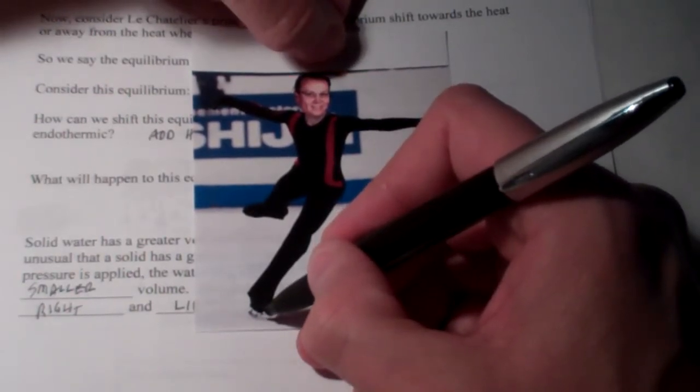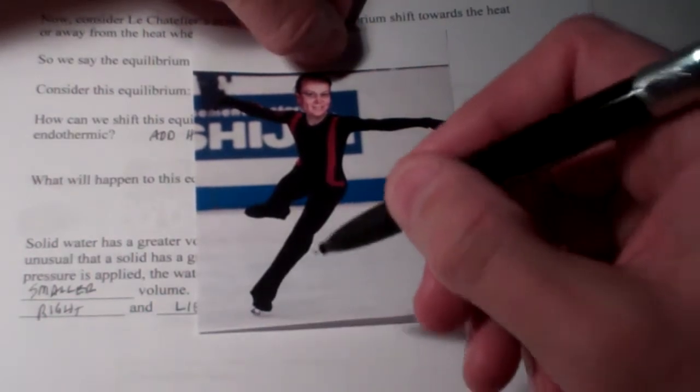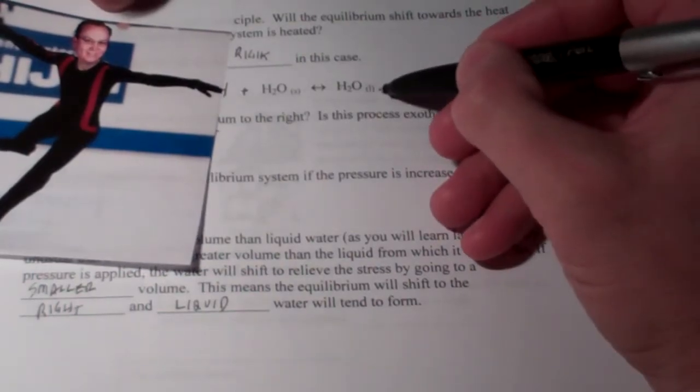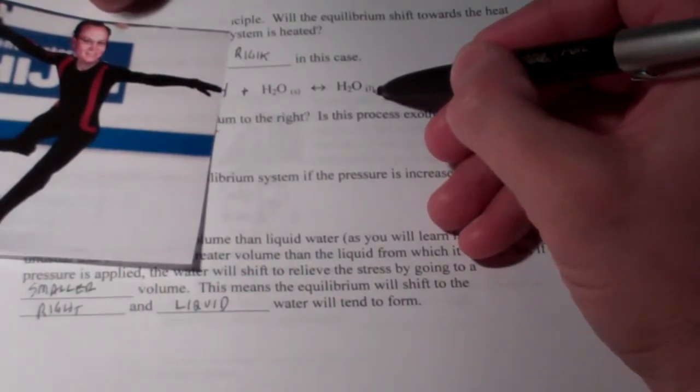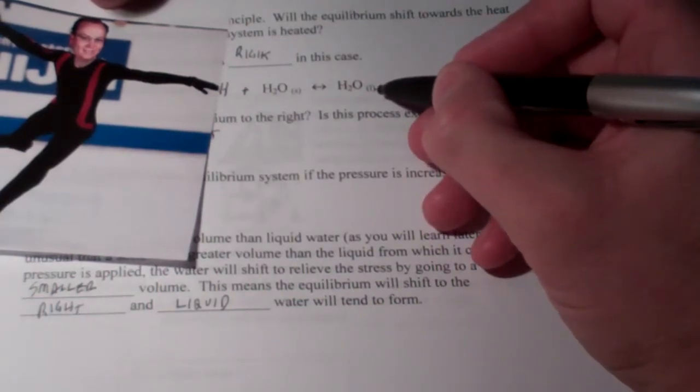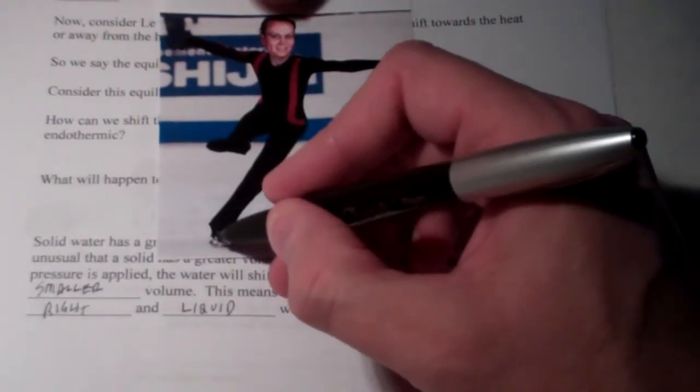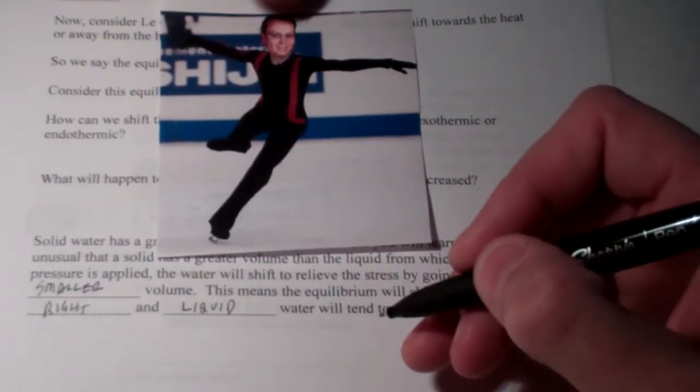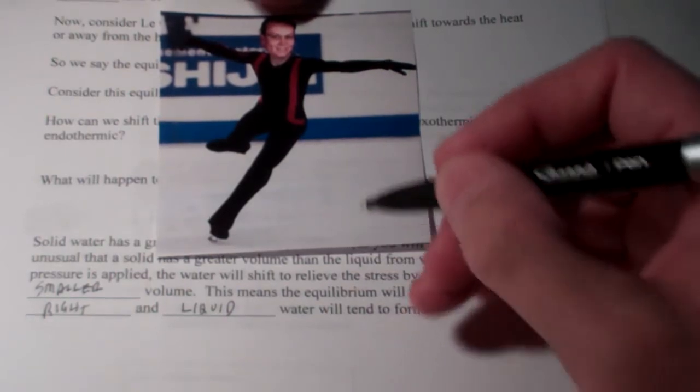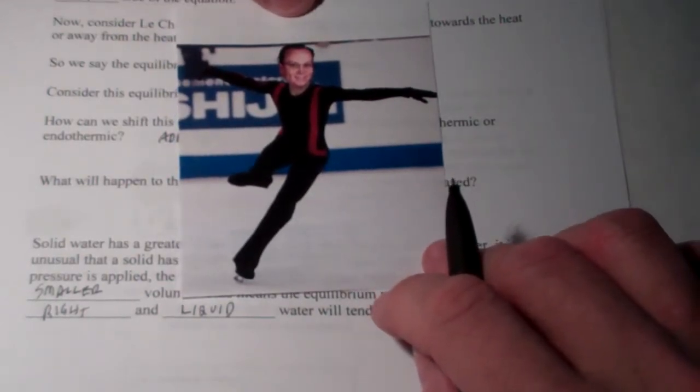Since the pressure is so high, it actually causes the water to turn to a liquid, even though the temperature is below zero degrees Celsius. It's shifting that way because the liquid phase is more dense. It occupies a smaller volume than the solid phase. So, it's actually skating on a very thin film of water. Of course, the coefficient of friction is much smaller for a thin film of water, so it can glide graciously across the ice.